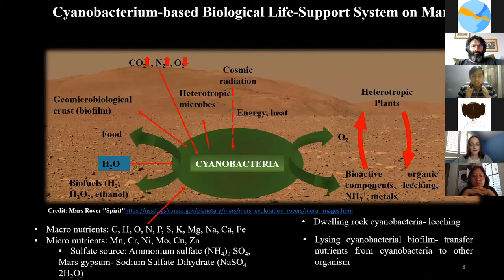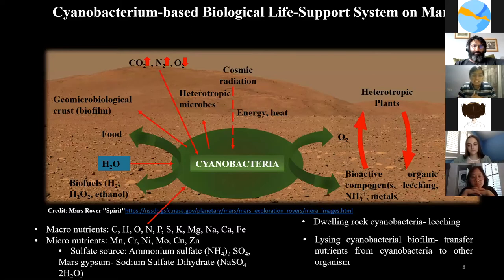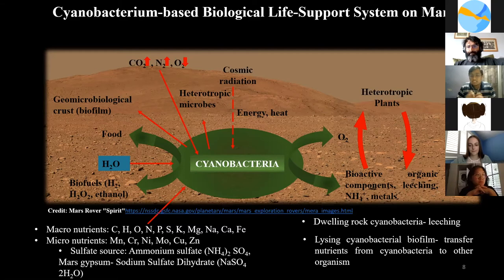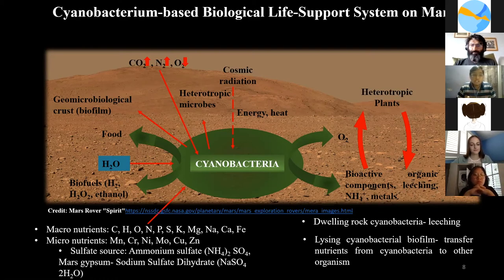This is not a purely theoretical concept — it is currently in a research process. It's a cyanobacteria-based biological life support system on Mars regolith, and different experiments have already been conducted in simulated Mars regolith. In Mars, there is a high amount of carbon dioxide and nitrogen, and a low amount of oxygen. Cyanobacteria can utilize many different sources to survive, including inorganic sources and high-energy photons.